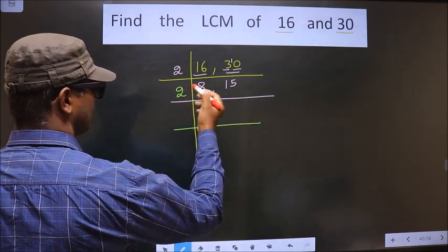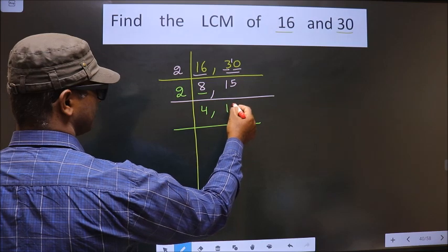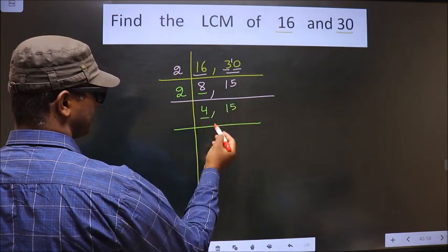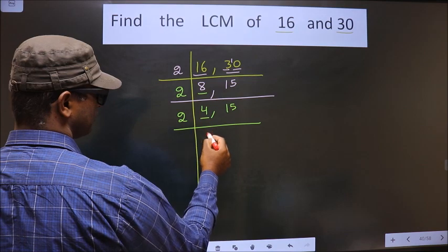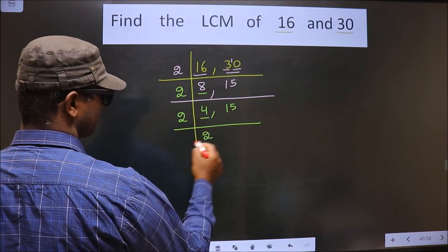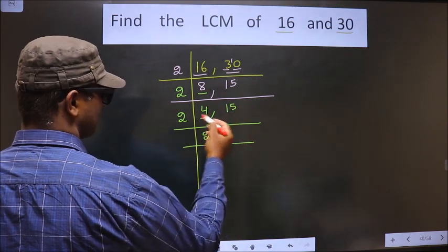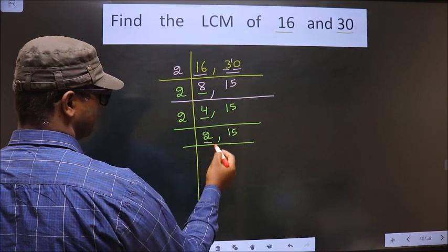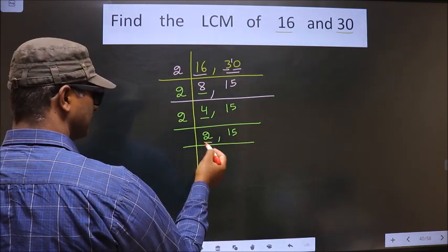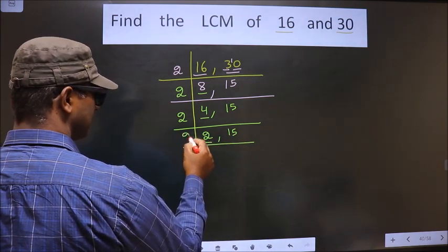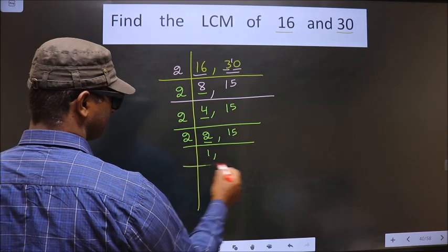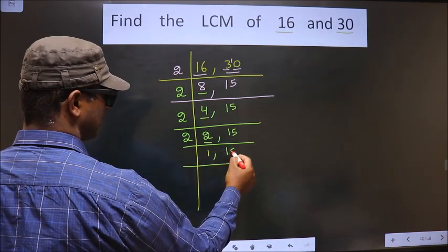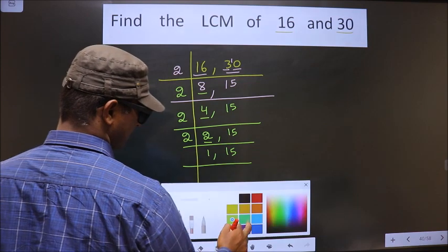15 is not divisible by 2, so you write down 15 as it is. Now here we have 4 — 4 is nothing but 2 times 2 equals 4. 15 is not divisible, so you write down as it is. Now here we have 2. 2 is a prime number, so 2 times 1 equals 2. 15 is not divisible by 2, so you write down 15 as it is.